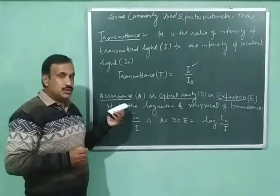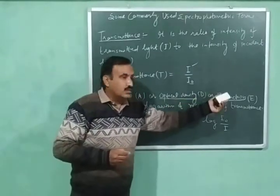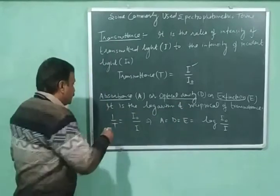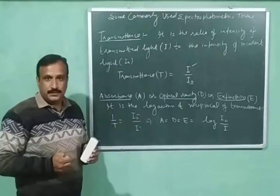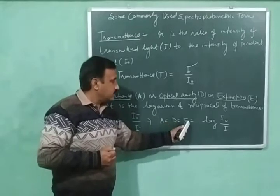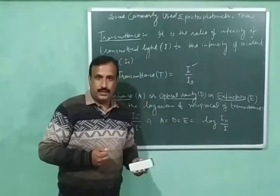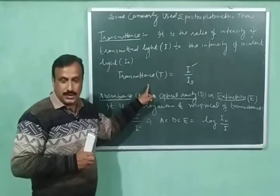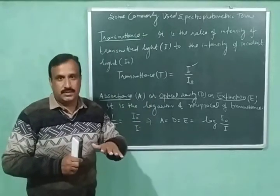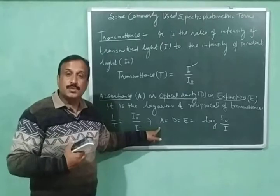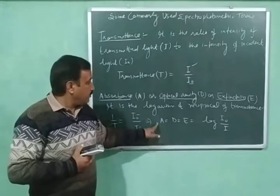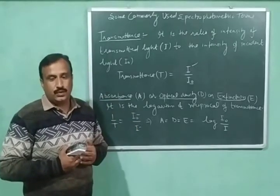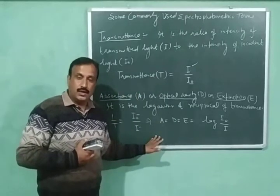Absorbance is denoted by capital A, optical density by D, and extinction by E. It is the logarithm of the reciprocal of transmittance. The reciprocal of transmittance, 1/T, equals I-naught upon I, so absorbance equals log of I-naught upon I. If absorbance has a higher value, absorption is greater; if absorbance has a lower value, absorption is less. Both transmittance and absorbance are very useful in UV and visible spectroscopy.